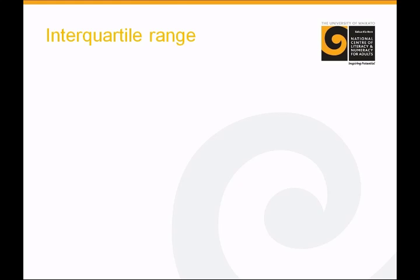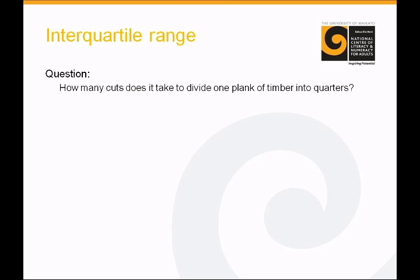The interquartile range is the next piece of data. The interquartile range has become used more often, and is a great way of describing data where measures of the middle are not so appropriate. I have a question for you just to get you thinking. How many cuts does it take to divide one plank of timber into quarters? If you could only make vertical slices, how many cuts will it take to make it divide into quarters? And the answer is 3. You'd simply make 3 slices and then you'd have 4 pieces of timber. Finding the interquartile range is the same. The interquartile ranges are simply the numbers that fall at each of those cuts.